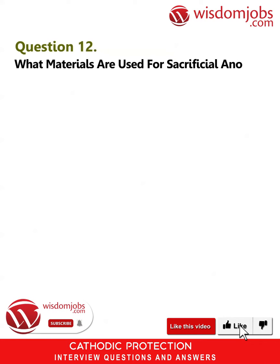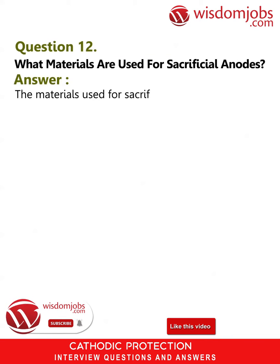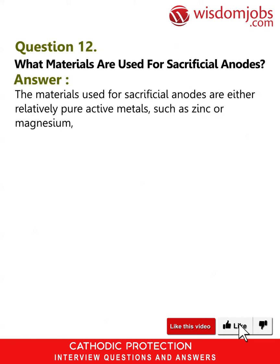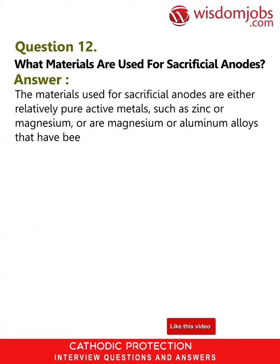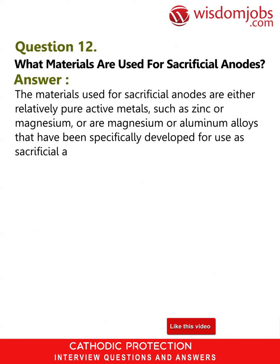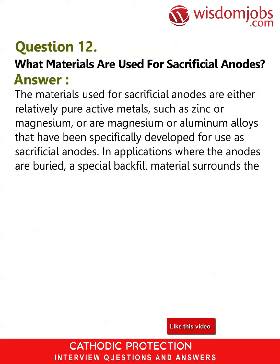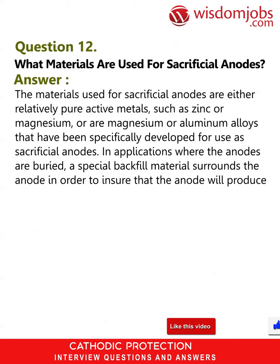Question 12: What materials are used for sacrificial anodes? Answer: The materials used for sacrificial anodes are either relatively pure active metals such as zinc or magnesium, or aluminum alloys that have been specifically developed for use as sacrificial anodes. In applications where the anodes are buried, a special backfill material surrounds the anode to ensure it will produce the desired output.